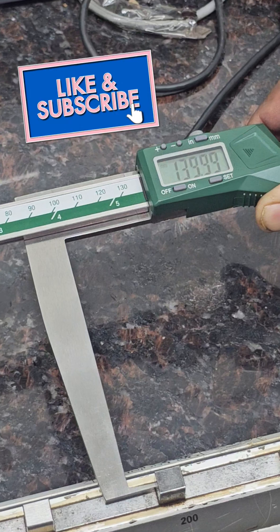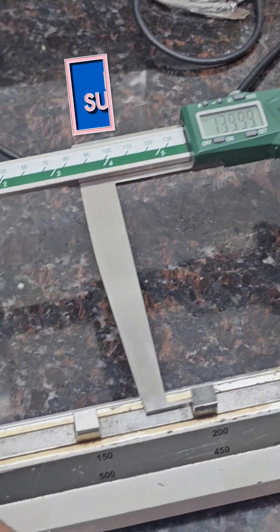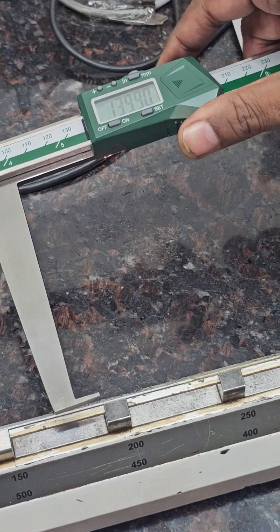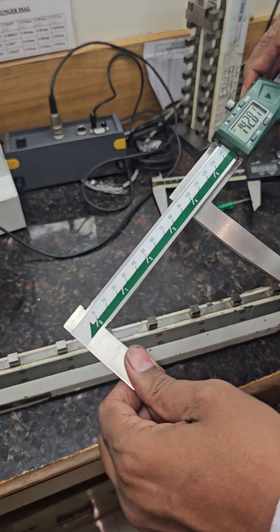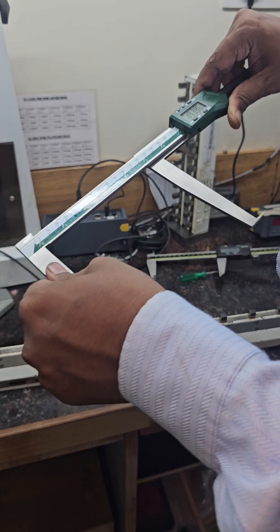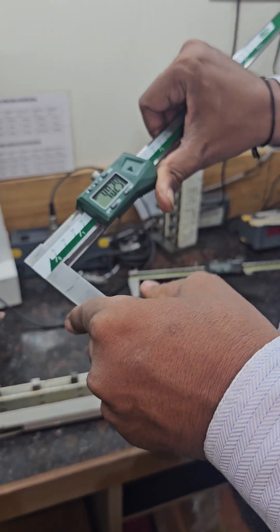139.91, take the highest reading. Highest reading 139.91, then 0.01 error is there. In that way, you have to set the inside groove caliper.